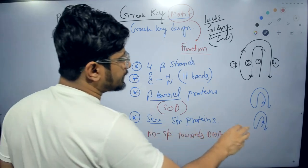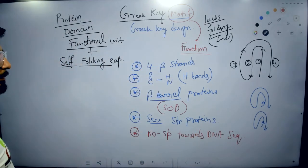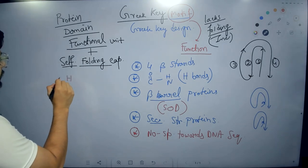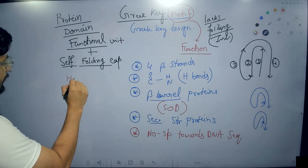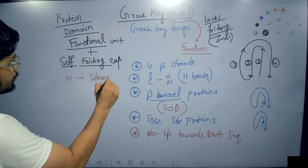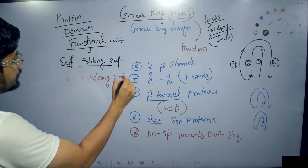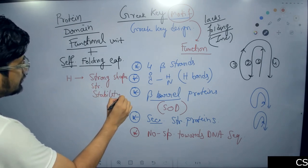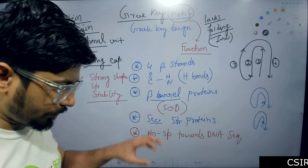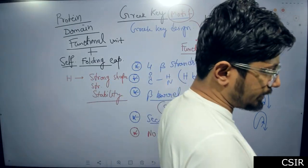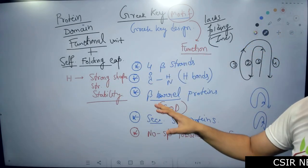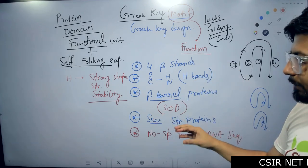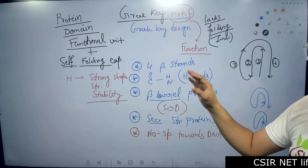Despite lacking sequence specificity, the Greek Key motif is extremely strong and helps build very strong shapes, providing structural stability to proteins. For proper structural stability, Greek Key motifs are predominantly functioning, and in most barrel-shaped proteins we see the Greek Key motif playing a key role.